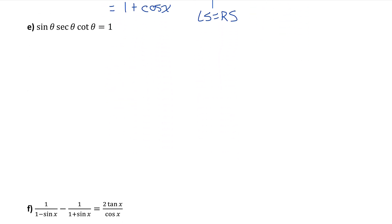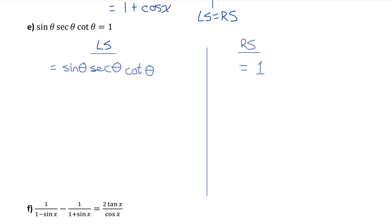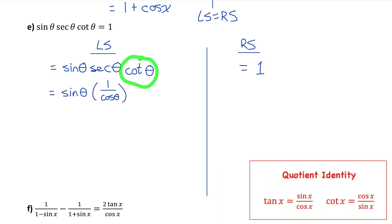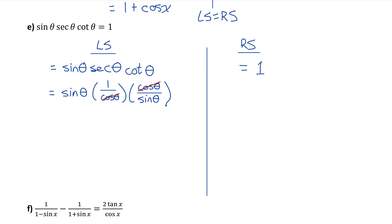On to Part E. I'll separate into left and right side. On the left I see two trig ratios that are not sine and cos. I'll replace sec of theta with 1 over cosine of theta, and using the quotient identity, cotangent of theta equals cosine of theta divided by sine of theta. The cosine ratios cancel out, and I also have sine theta divided by sine theta, which means the left side equals 1 — exactly the same as the right side. We've proven that Part E is an identity.